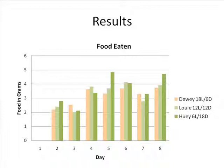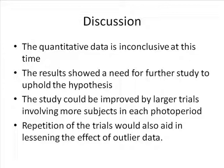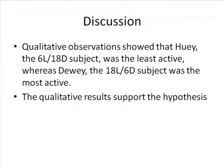The graph of the food eaten shows that further testing is needed, as the high values for Huey, the 6 hours of light and 18 hours of dark subject, seem counterintuitive. While the quantity of data is inconclusive at this time and the results showed a need for further study, new trials involving more subjects in each photo period would improve the data results. Repeating the trials would lessen the effect of the outlier data. I would also like to include additional indicators of health, such as color, mass, and girth.